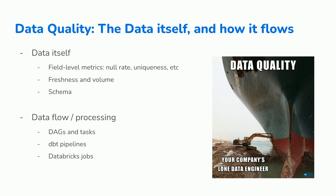Some things come to mind. One is field-level metrics. For example, you don't expect to find nulls in an ID column, so your null rate should be zero there. The same for uniqueness — if you have an ID column, you don't expect any duplicates. You expect all your IDs to be unique, and if they are not, you have a data quality problem.